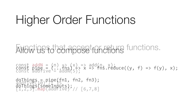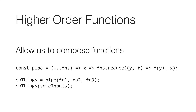The real power of higher order functions comes when we're able to use them to compose functions together. This is a pipe. Pipe takes a set of functions as arguments — as many as you want — and returns a function that when called, the inputs are sent to the first function, the outputs of that sent to the second, the outputs of that sent to the third, and so forth. It's basically piping data through a chain of things.